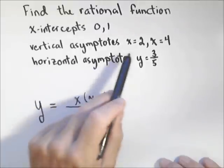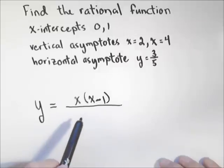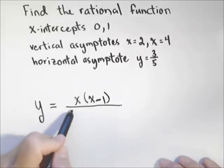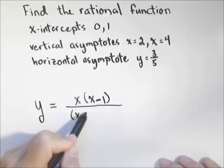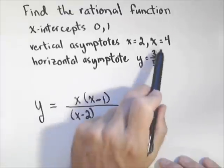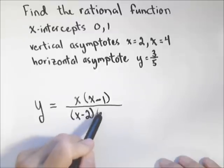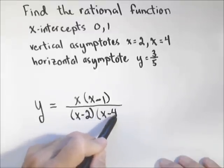Similarly, the vertical asymptotes come from zeros in the denominator. So if x equals two is a vertical asymptote, x minus two must be a factor in the denominator. If x equals four, you guessed it, x minus four.